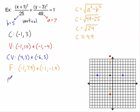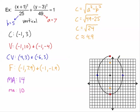The major axis is 2 times a, which equals 14 units. The minor axis is 2 times b, which equals 10 units. We have all the pieces — the only thing remaining is sketching a nice picture of the ellipse. Thank you for watching this tutorial on how to graph vertical and horizontal ellipses.